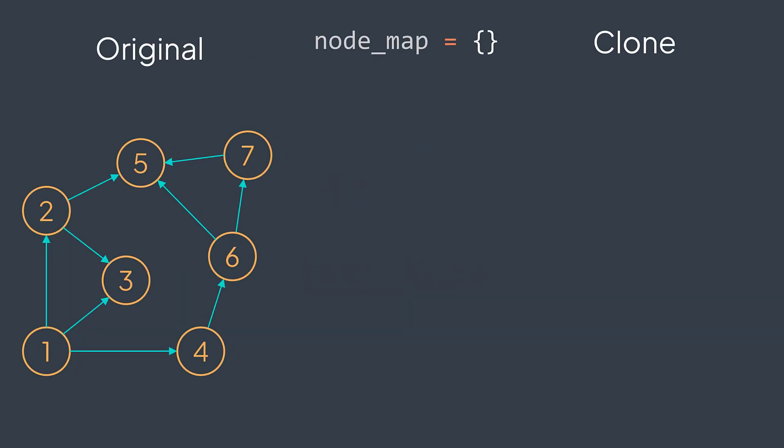With the previous example, we started from one. We created a node that has the value one and put it in the hash table. Node map of one now represents the node we just created. Then we move to five, same thing.